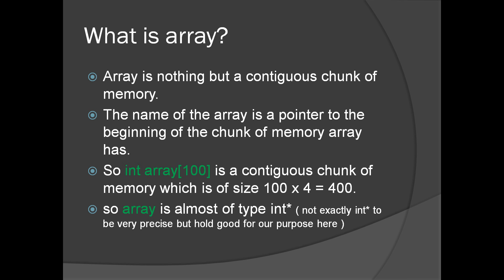An int array of 100 is a contiguous chunk of memory which is of size 100 times 4, equal to 400 bytes. So the identifier 'array' is almost of type int*. For all practical purposes we can assume that the identifier 'array' is of type int*, which is the start address of the memory location in which the array is allocated.